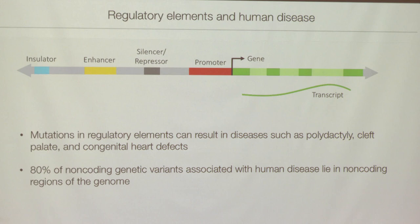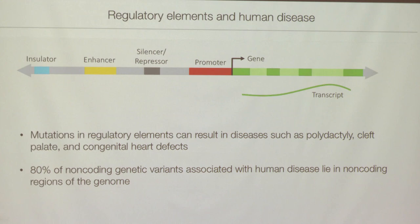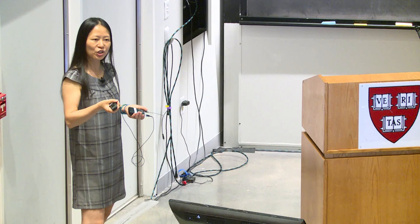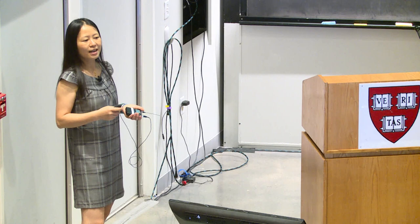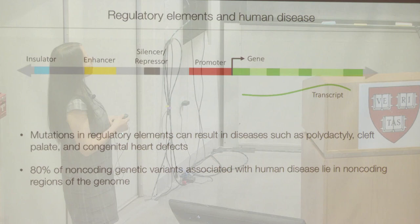Genes are really important — mutations in genes very commonly cause diseases. But in addition to genes, regulatory elements are also very important. Mutations in regulatory elements may also cause diseases, though they are not as frequent since many regulatory elements regulate one gene — a many-to-one relationship. Nonetheless, there are well-known examples where mutations in regulatory elements result in very drastic diseases such as polydactyly, cleft palate, and congenital heart defects.